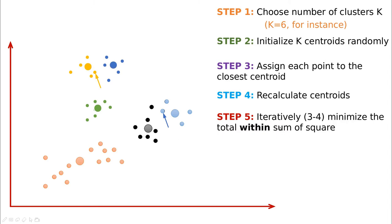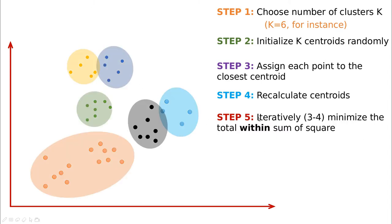In R, we're going to set that to 10 iterations by default. We now have some sort of partition — these are the final clusters.